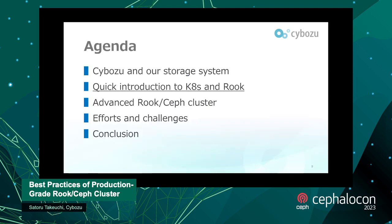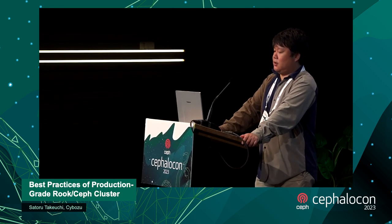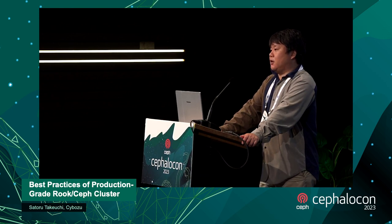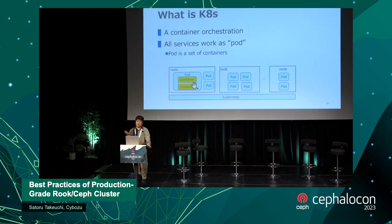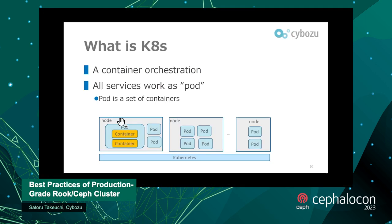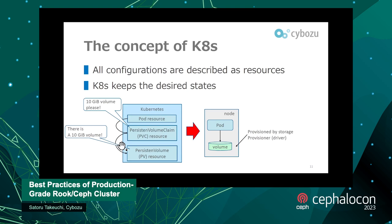Next, a quick introduction to Kubernetes and Rook. What is Kubernetes? It's a container orchestration system where all services work as a pod. A pod is a set of containers. The bottom side is Kubernetes with many nodes — applications and Ceph OSD daemons work as pods. All configurations are described as resources — Kubernetes resources — and Kubernetes keeps the desired state of the real system.